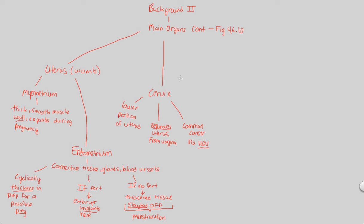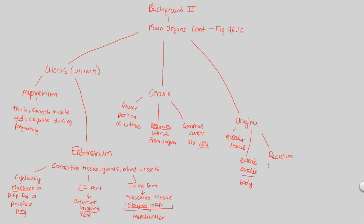Moving forward — we've covered the uterus and the cervix. The next major organ is the vagina, a muscular tissue that's also part of the female reproductive tract. This is the first structure we discuss that extends outside the body, marking our first look at the external female reproductive system. The vagina is the specific part that directly receives the penis and sperm, making it a very important functioning organ of the female reproductive system.